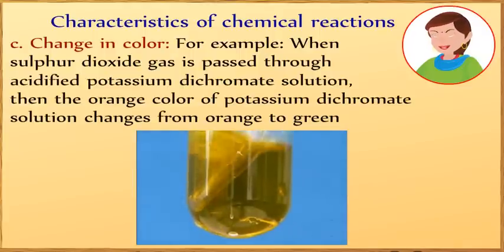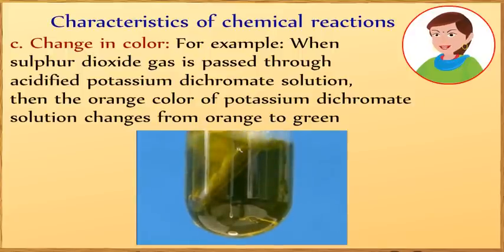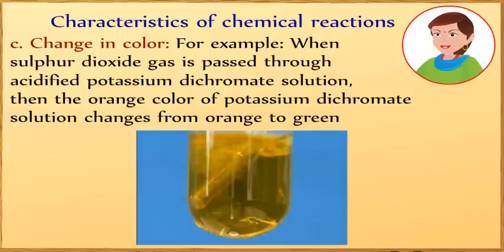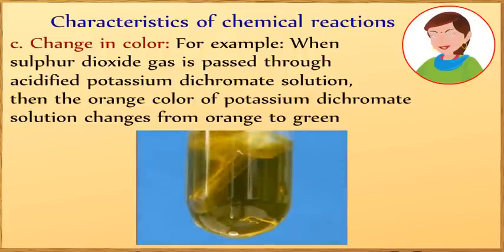Change in color. For example, when sulfur dioxide gas is passed through acidified potassium dichromate solution, then the orange color of potassium dichromate solution changes from orange to green.